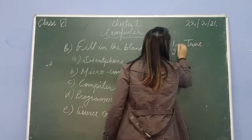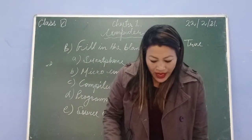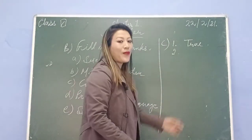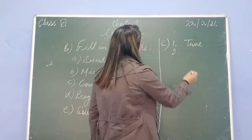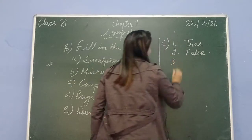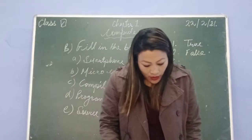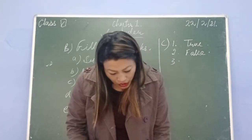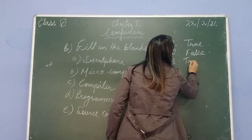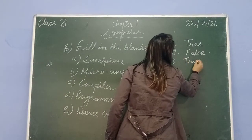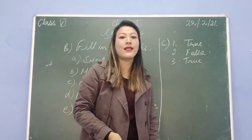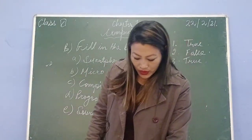Number two: a program written in a high-level language is known as an object code. No - a program written in a high-level language is not called an object code. This is false. Number three: mainframe computers are used by large organizations, airlines, and banks. This is true - mainframe computers are used by airlines and for large amounts of transactions in banks.